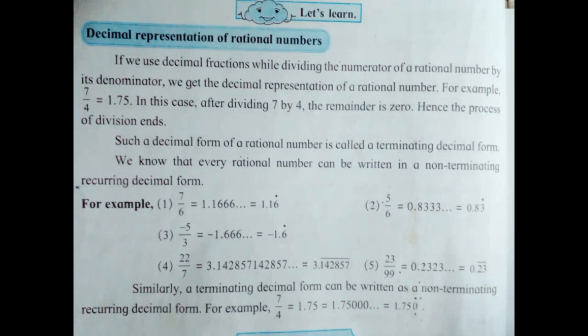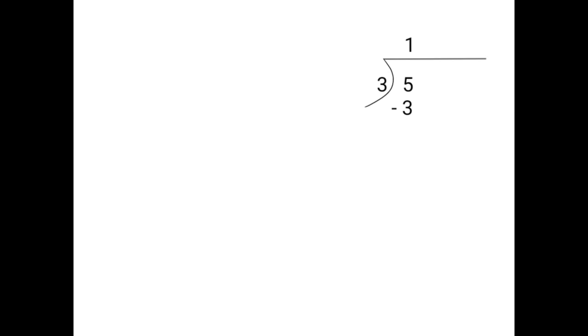Let's take another example. We will divide the number minus 5 upon 3. 3 ones are 3. 5 minus 3 is 2. Take the decimal point, bring down 0, and put the decimal point on the quotient place. 3 sixes are 18. 20 minus 18 is 2.